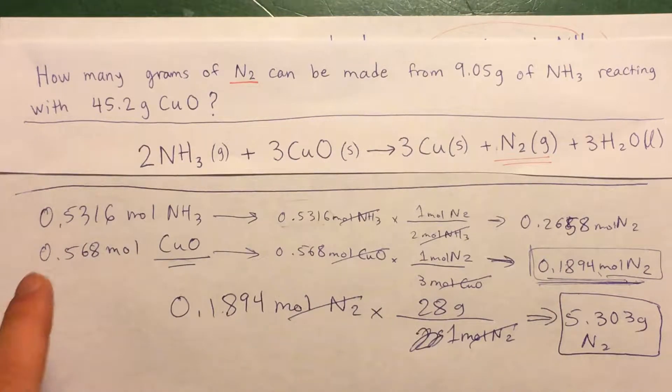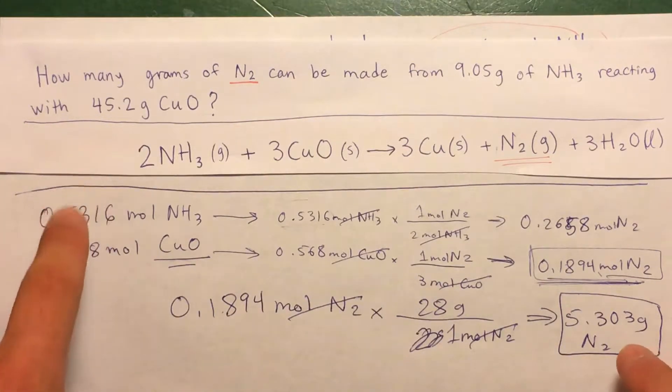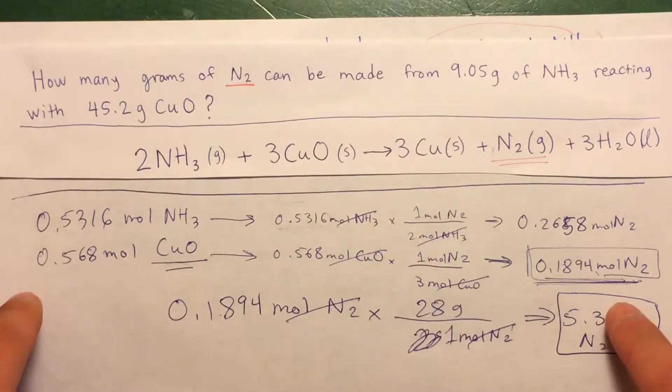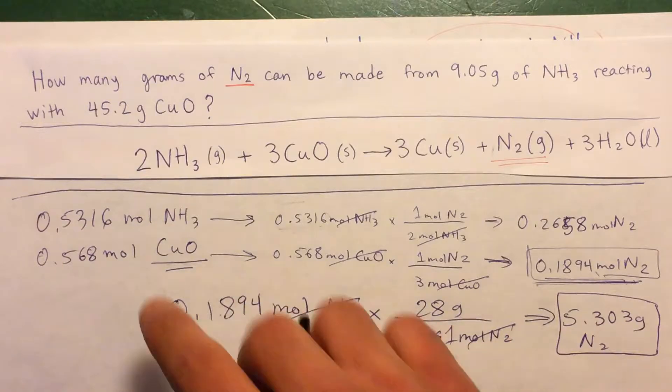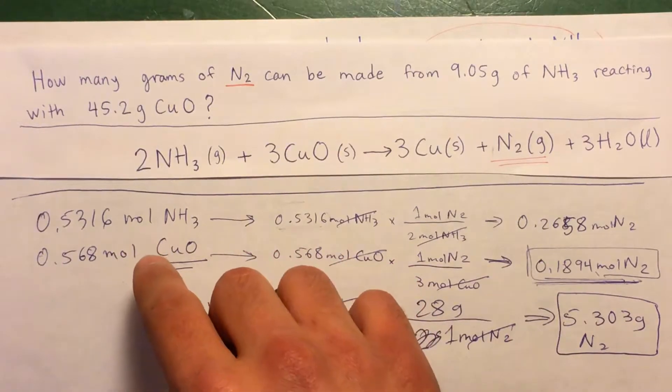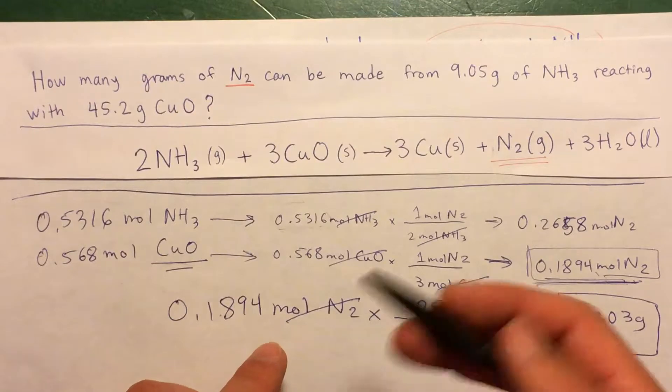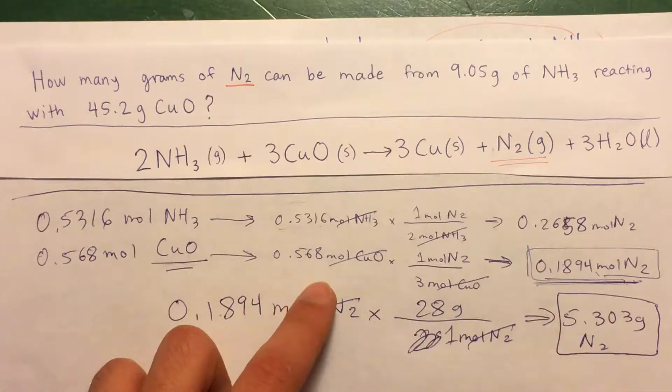Alright, so in continuation of the previous problem where I worked on finding how much we could make, how much N2 we could make, given finding what the limiting reactant is, now we want to find how much of the excess reactant would be left over.